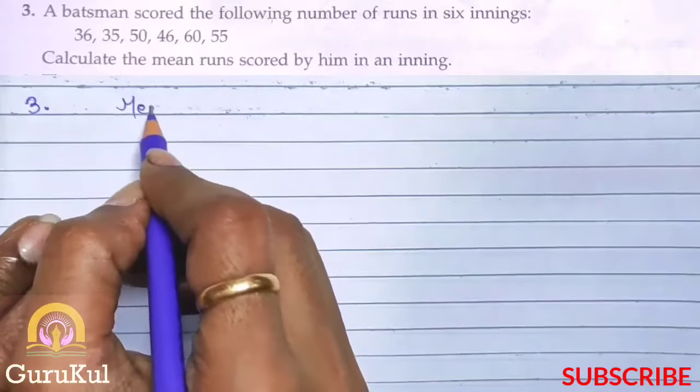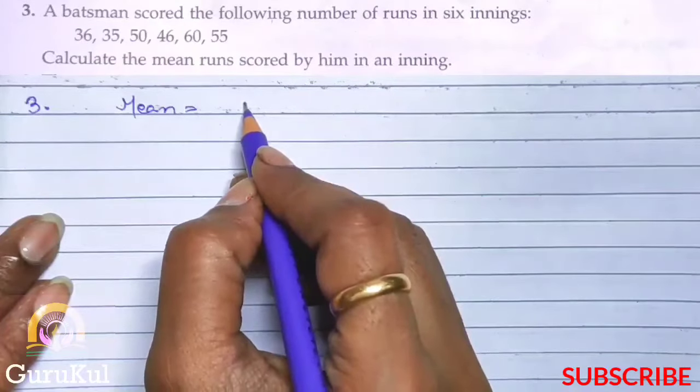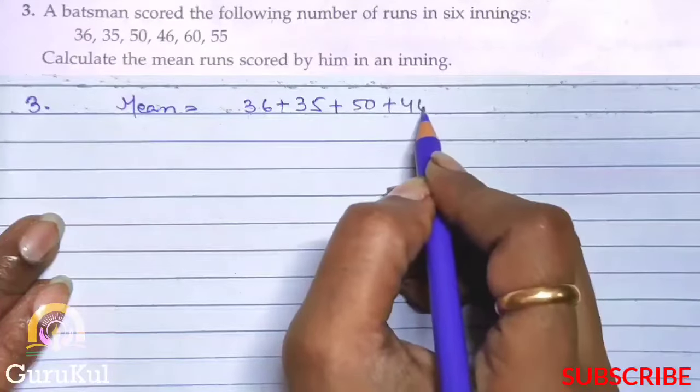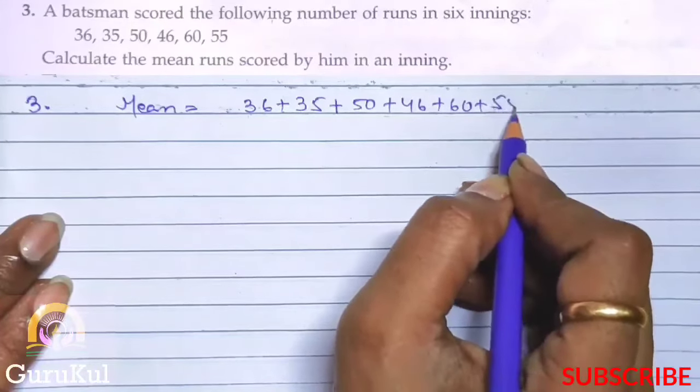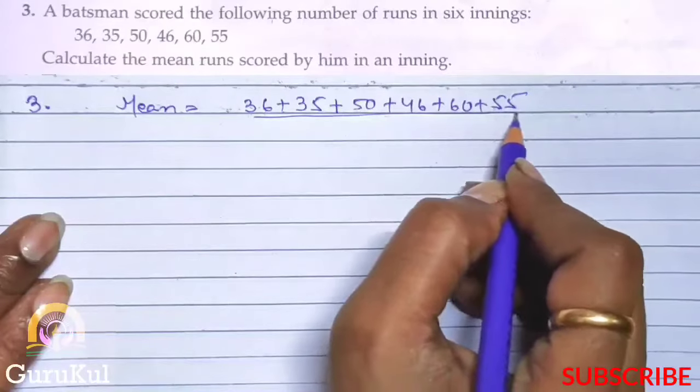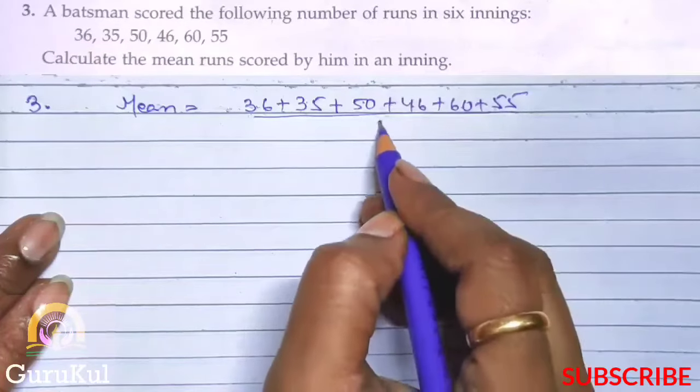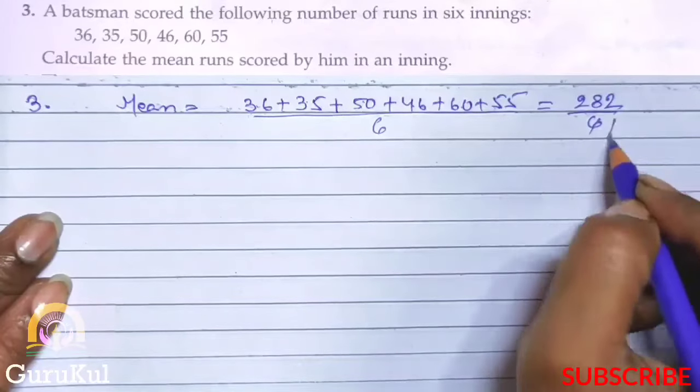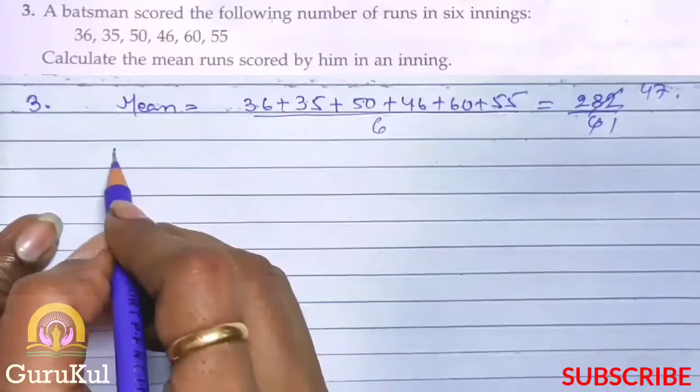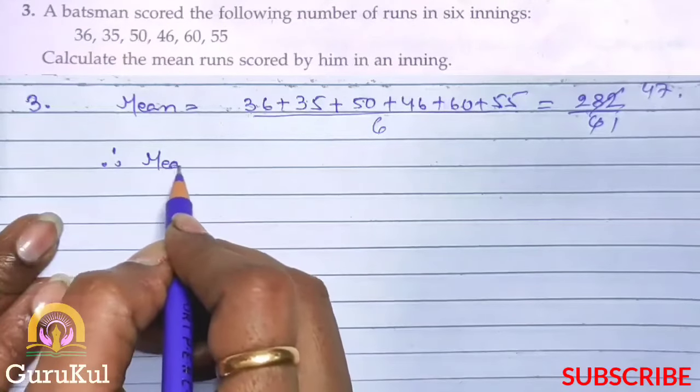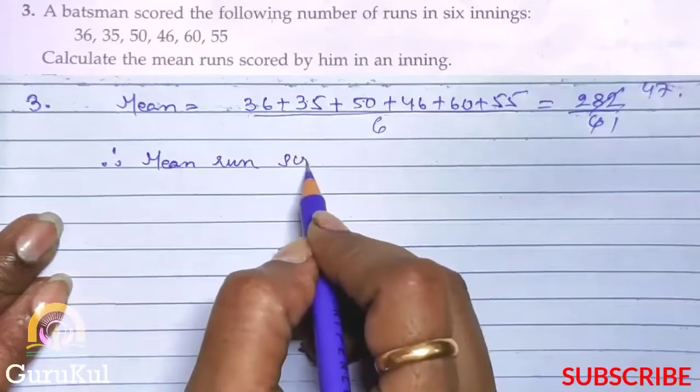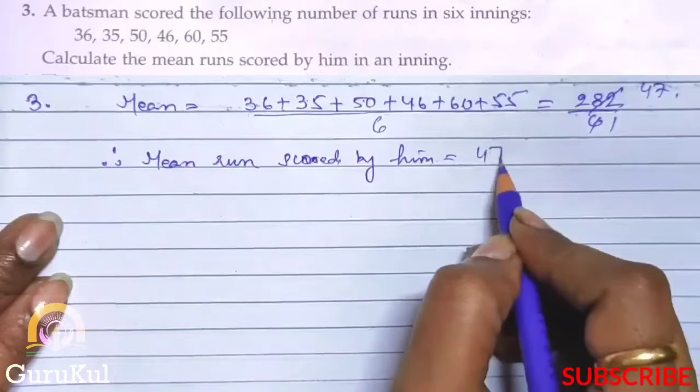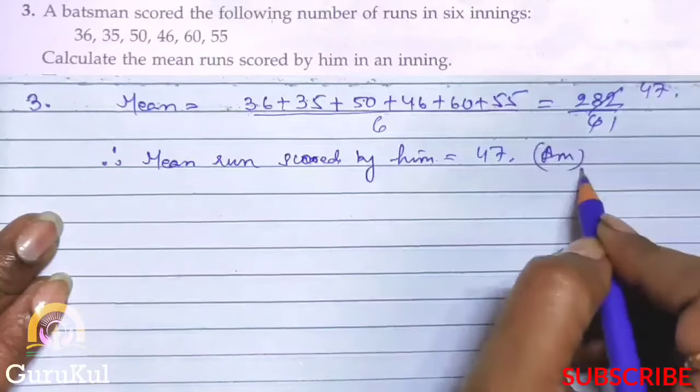So the mean will be: first we add all of them. That is 36 plus 35 plus 50 plus 46 plus 60 plus 55 divided by number of observations: 1, 2, 3, 4, 5 and 6, right? So adding all these our answer is 282 divided by 6, which is 47. Therefore the mean run scored by him is 47. So this is the answer.